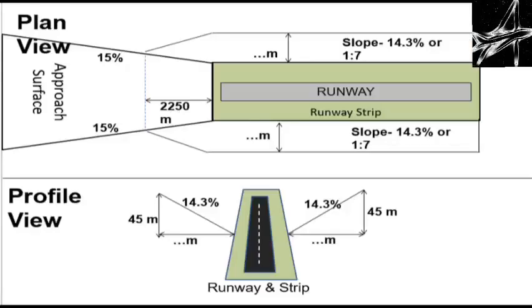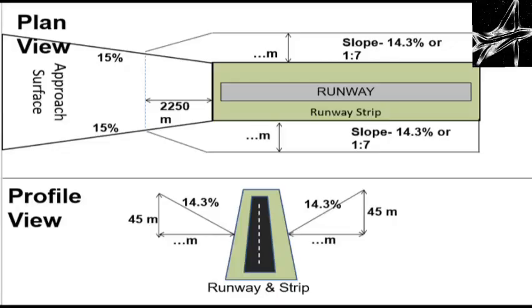The transitional surface merges with the inner horizontal surface. A question for viewers: the image shown is a top view of the transitional surface as seen by an approaching aircraft. Please find the value of M and comment below. The value of M shows the distance to which this surface extends from the runway strip.